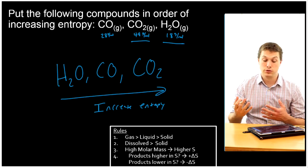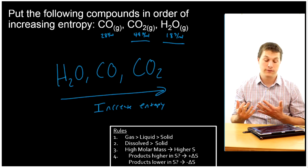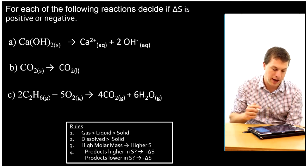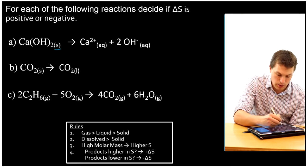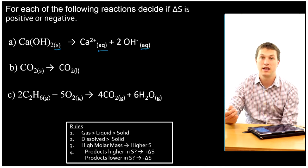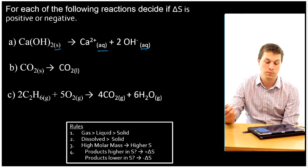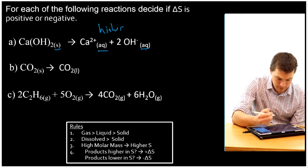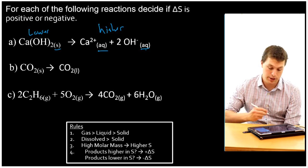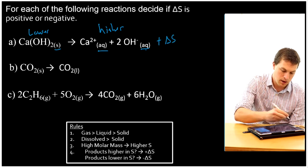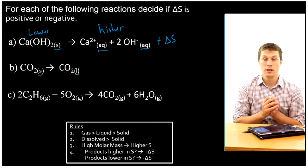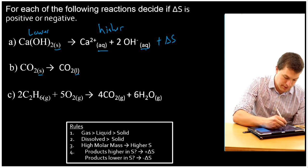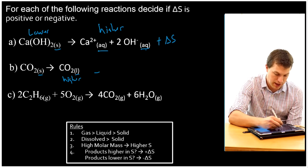Now let's look at some more chemical reactions. In the top reaction, calcium hydroxide solid goes to calcium aqueous and hydroxide aqueous — that is a process of dissolution. Dissolved things have higher entropy than solid things, so the products are higher in entropy, giving a positive delta S. Next, CO2 solid melts into liquid CO2. Liquid is higher in entropy than solid, so the products are higher in entropy — that's also a positive delta S.